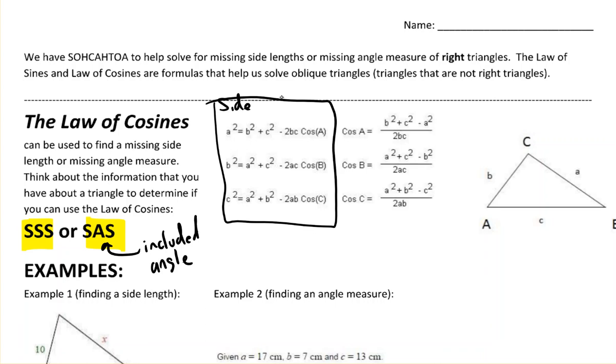So these three are great for side lengths. And then we can use these three to find a particular angle. Cosine a, cosine b, cosine c, but we can just do inverse cosine to get those. So this is for angle measures.